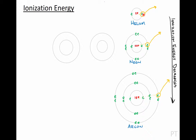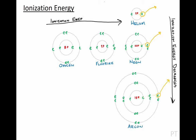Now we should also discuss the pattern of ionization energy when going left to right on the periodic table. For this, we'll look at atoms with 8, 9, and 10 protons — these atoms are named oxygen, fluorine, and neon. Remember that if an atom has 8 protons, it will also have 8 electrons: 2 in the first shell and 6 in the second shell. Fluorine has 9 electrons, 2 in the first shell and 7 in the second shell. And then we have neon with 10 electrons. We saw this trend: as you move left to right, the ionization energy increases. But why would that be true?